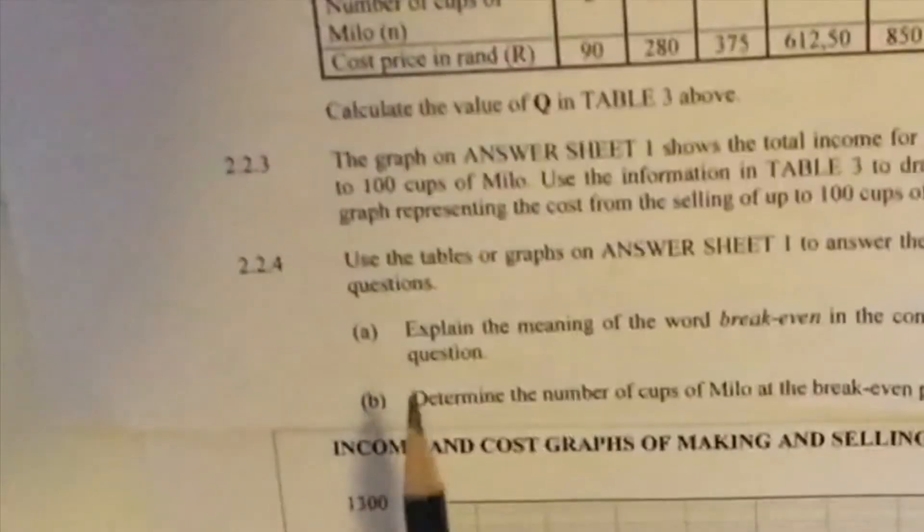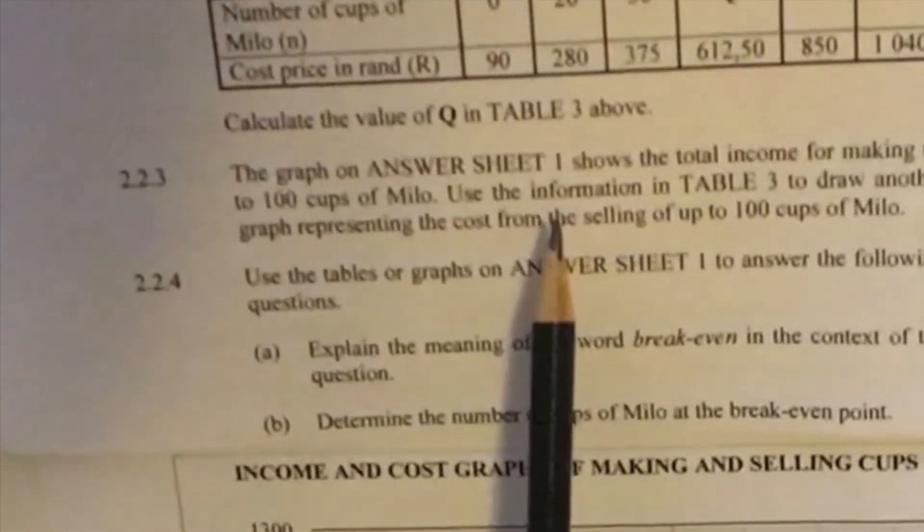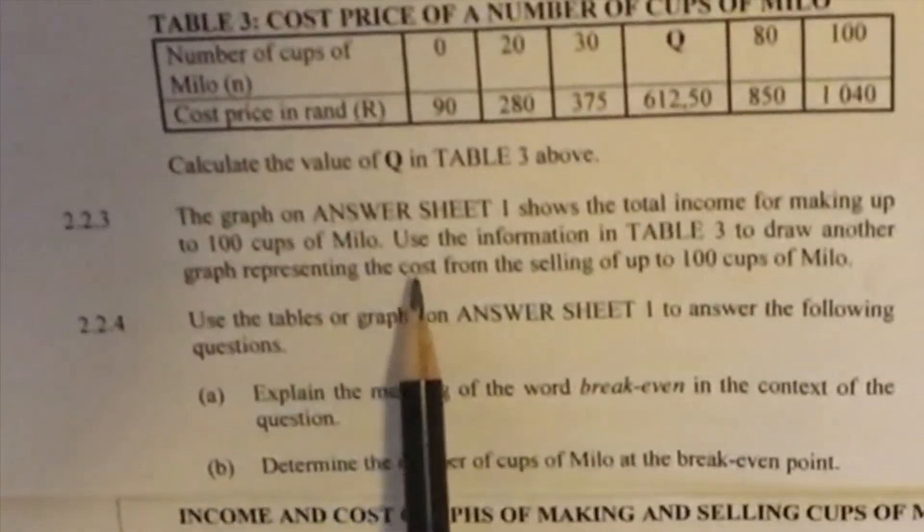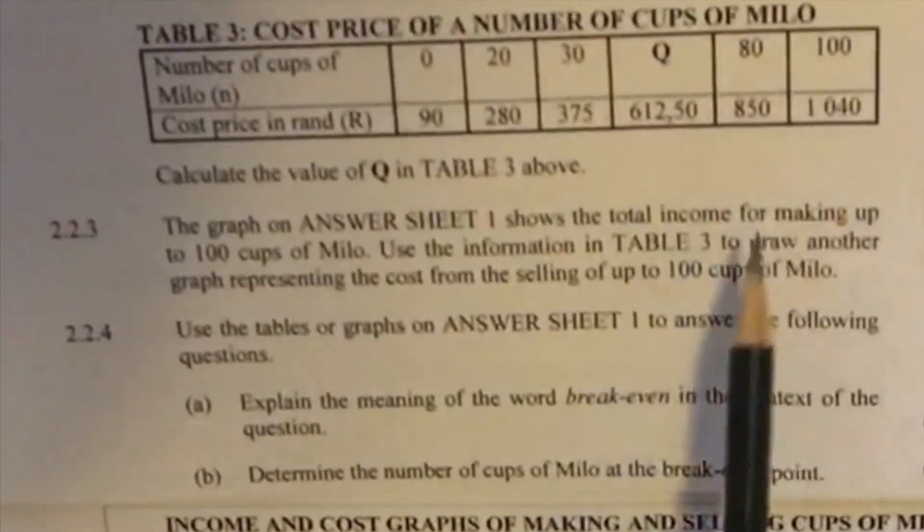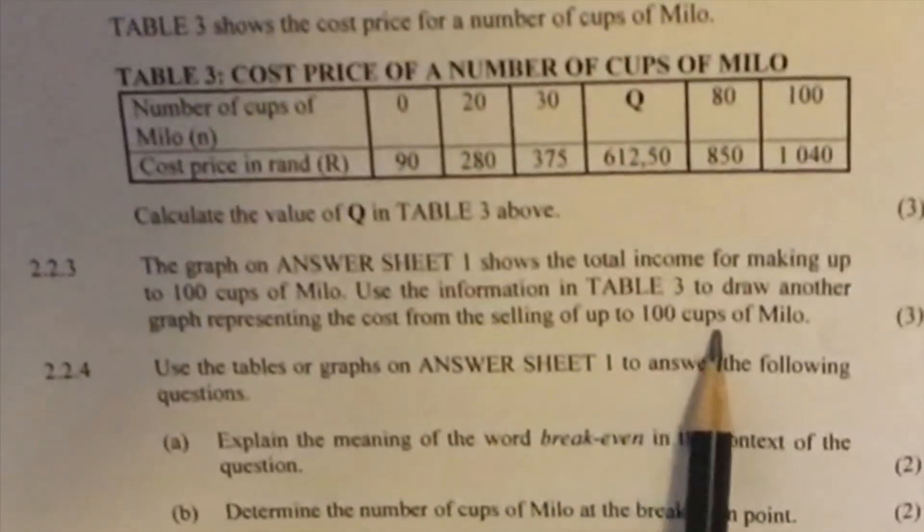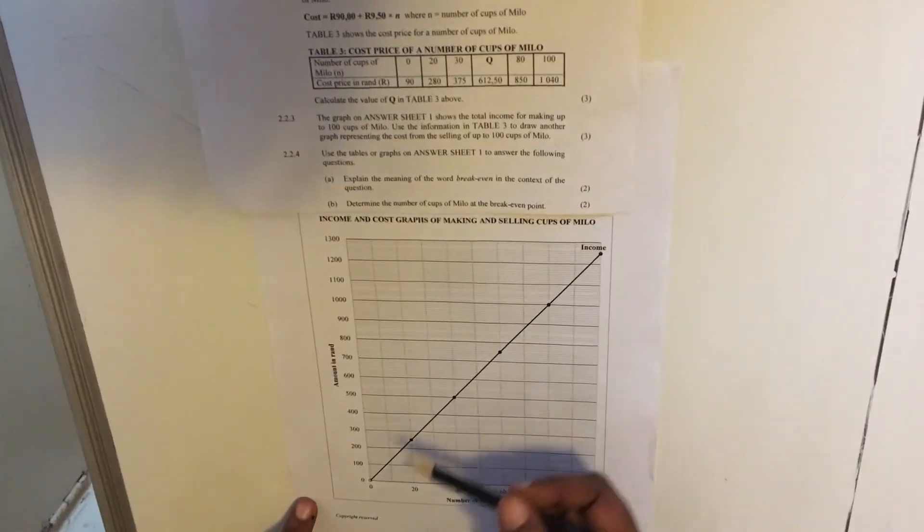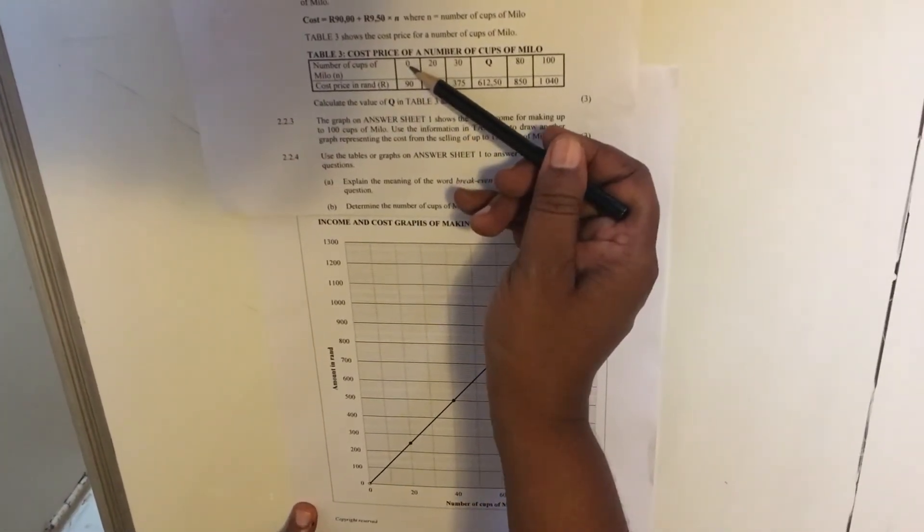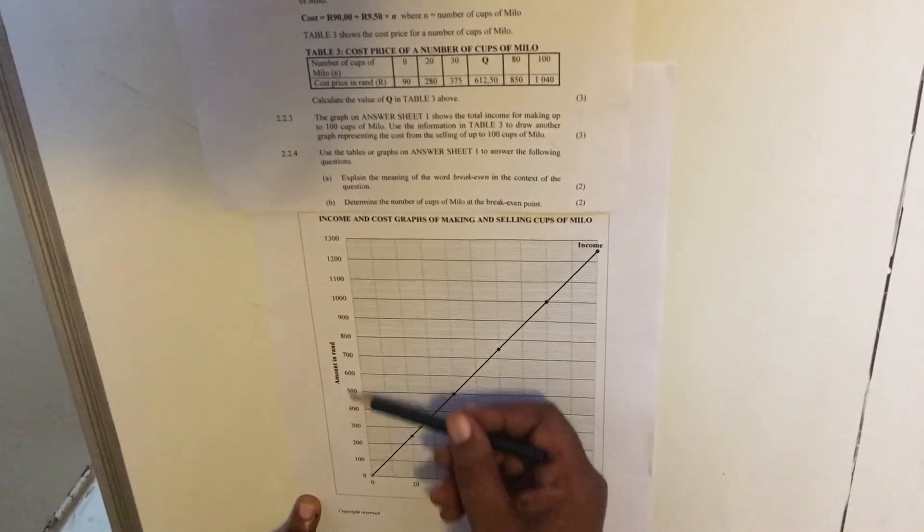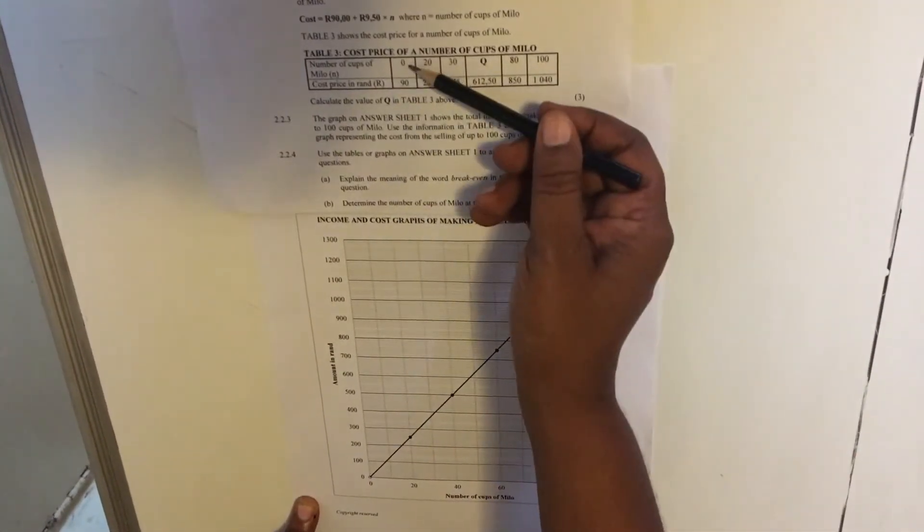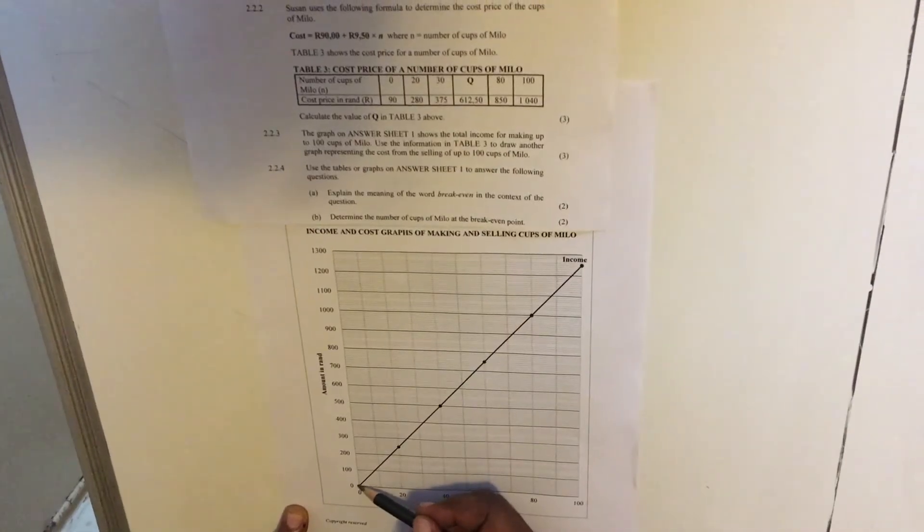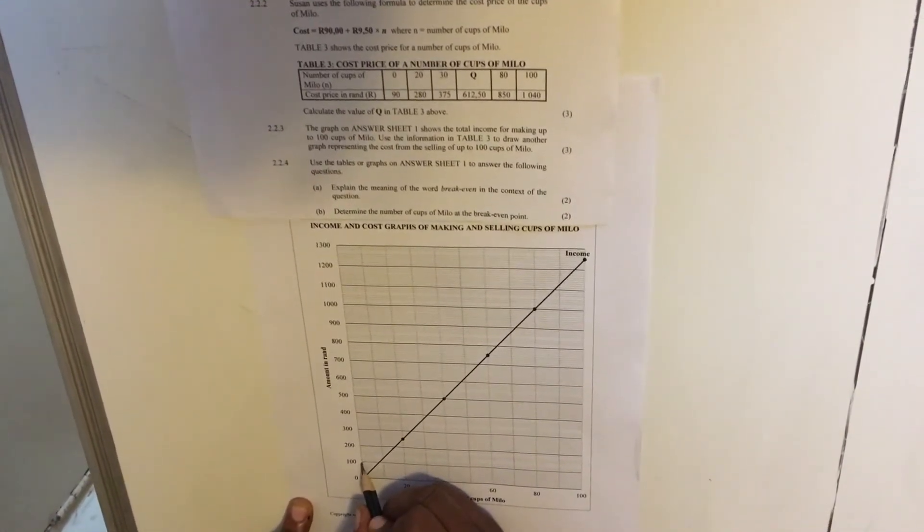Let's look at the next question. 2.3. The graph on answer sheet 1 shows the total income for making up 100 cups of Milo. Use the information on table 3, this information. Draw another graph representing the cost from the sales of up to 100 cups of Milo. Okay. Now on our graph, the first thing, when you have zero cups, in the bottom of our graph is the number of cups of Milo. On this side is the amount. When you have zero cups, the cost is R90. So I'm gonna go here and this is my R90. This is my 100. My R90 is a little bit below.